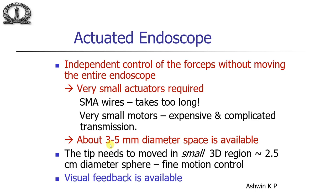Some advantages we have: we only need to move the tip in a small 3D region — something of the order of a 2.5 cm diameter sphere — but we need fine motion control. Importantly, visual feedback is already available through the camera, so if you are going in the wrong direction you can correct it.